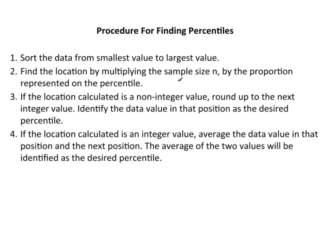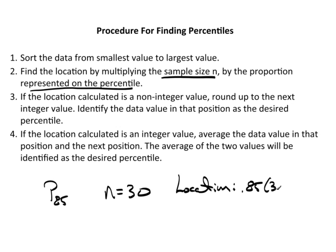So I want to find the location by multiplying the sample size n by the proportion represented in the percentile. As an example, if I wanted P85 and say that n equals 30, a data set had 30 values, the location we would find by taking 0.85 and multiplying it by 30. That's what this sentence means.